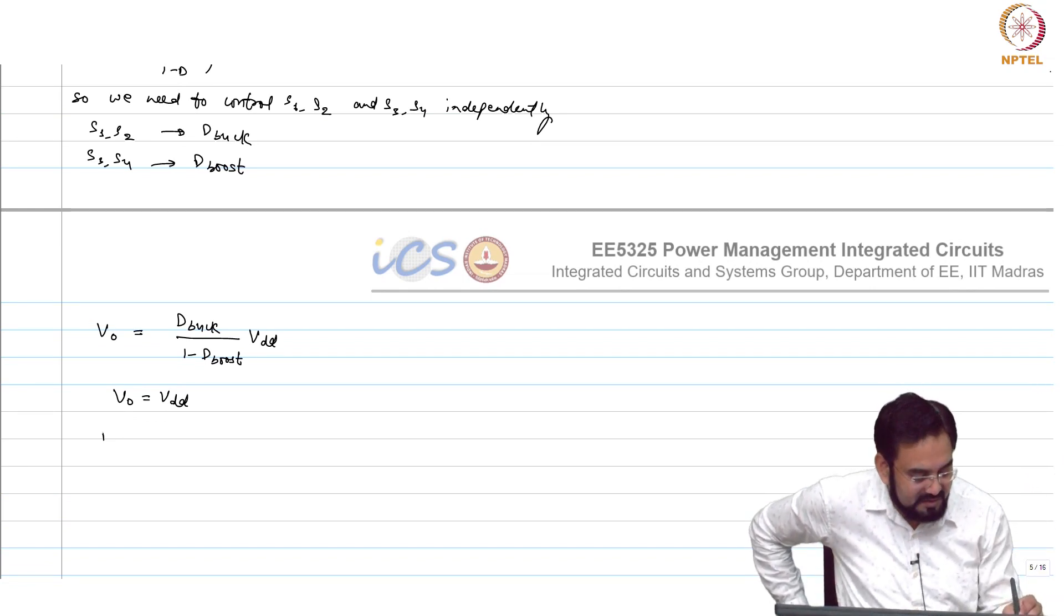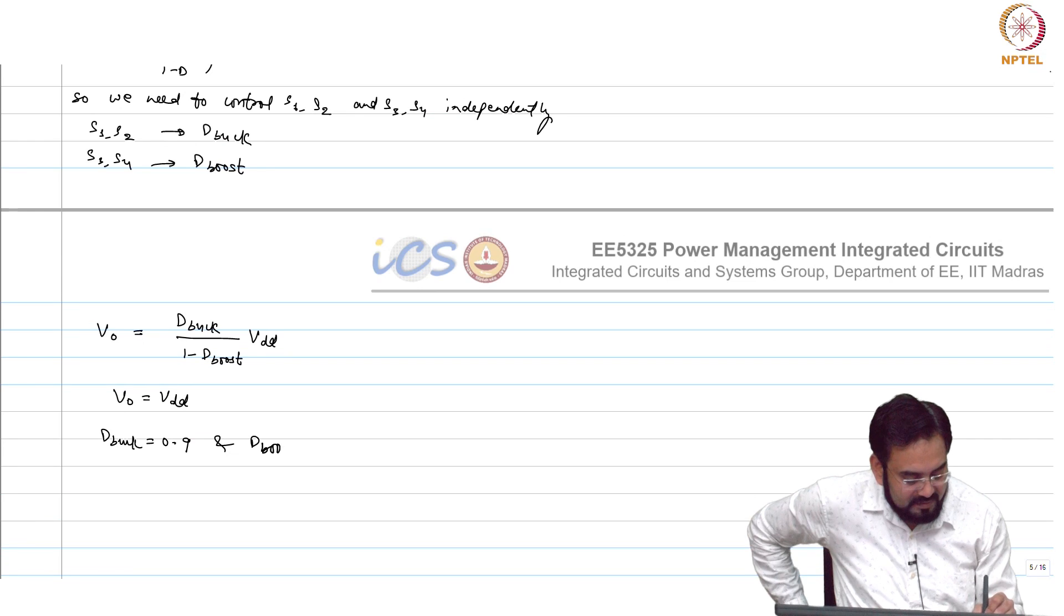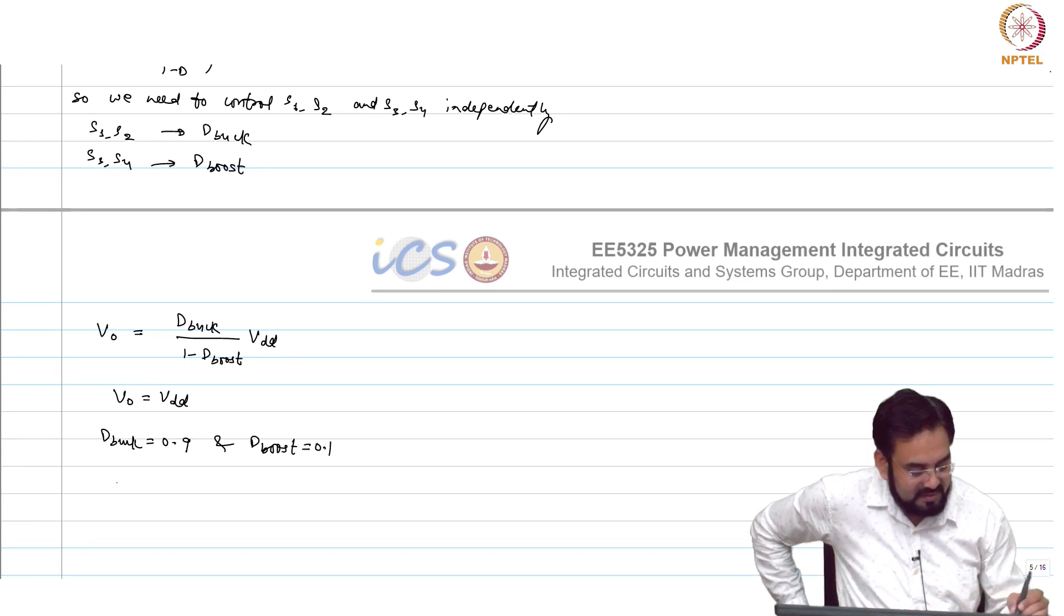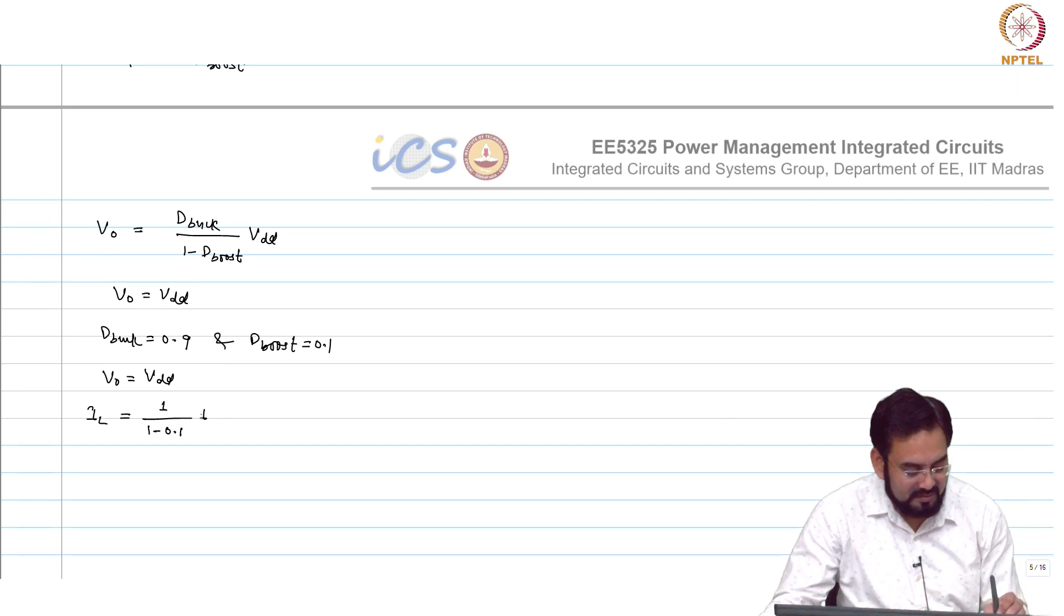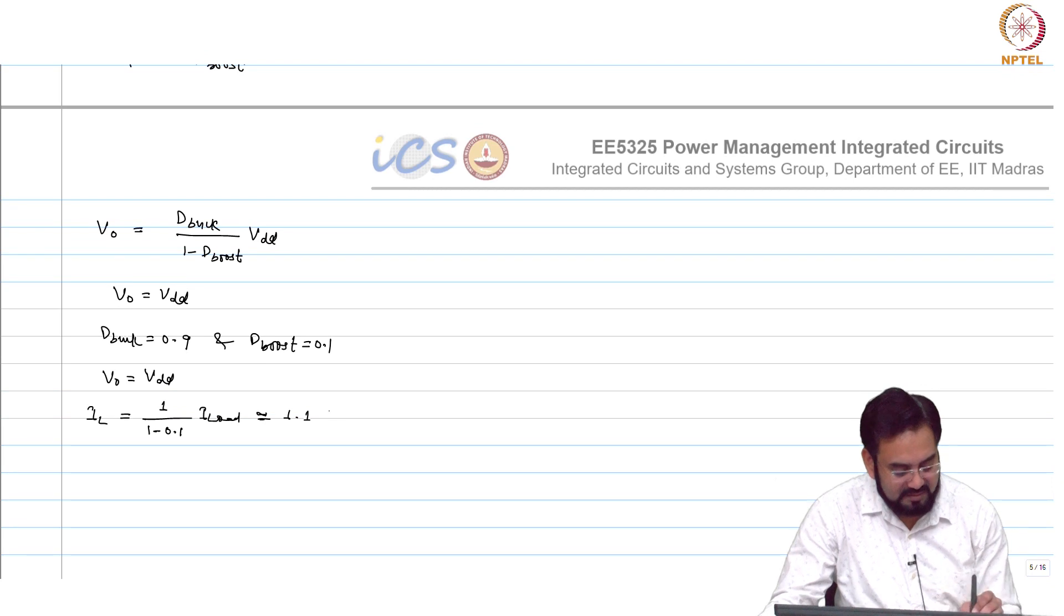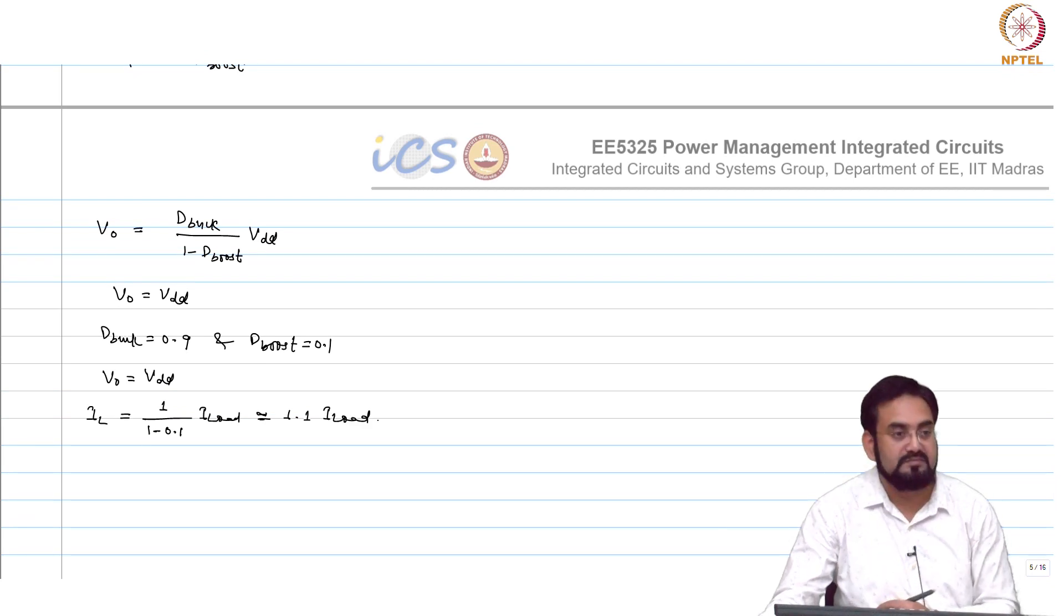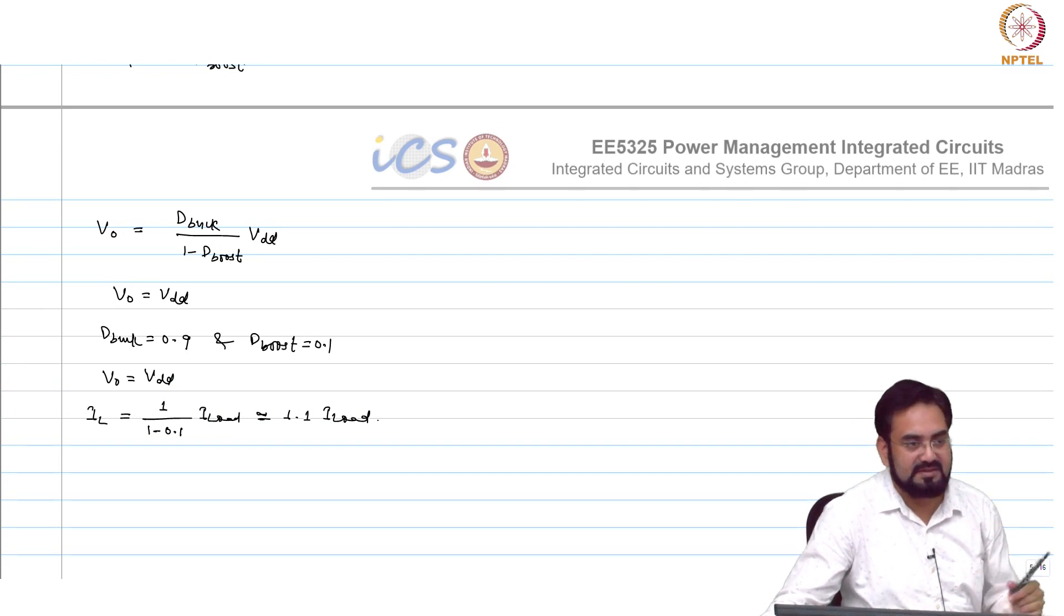Now, if I make debug equal to 0.9 and dboost equal to 0.1, V out equals V dd. What is the current? The inductor current IL, how much? 1 over 1 minus 0.1, pretty close to 1.1 I load, only 10 percent increase. In the other case, it was 2x increase.